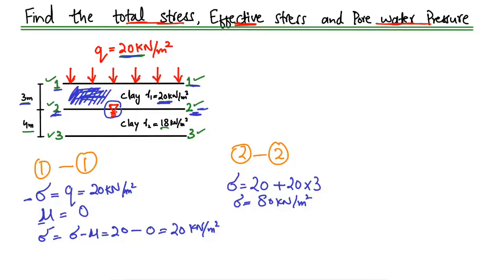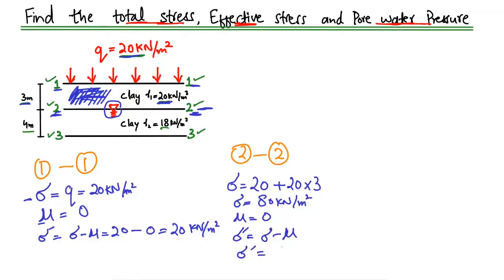There is still no water table acting up to point 2-2, so the pore water pressure is again 0. The effective stress sigma dash equals total stress minus pore water pressure: 80 − 0 = 80 kN per square meter.